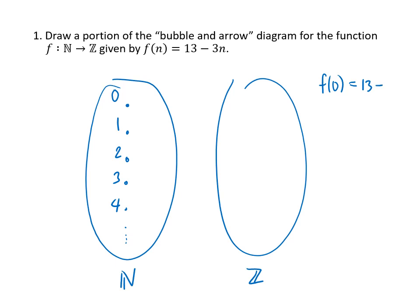So f(0) = 13 - 3(0), that's 13. So over in the integers, we have the integer 13, and there's an arrow pointing from 0 to 13. We plug in 1. We get f(1) = 13 - 3(1), that's 10. So in the integers, we have an arrow pointing from 1 to 10.